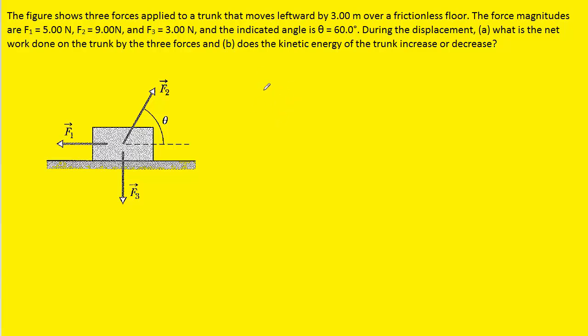We know that in order to calculate the work that a particular force does on an object, we have to multiply the magnitude of that force by the displacement by the cosine of an angle. And that angle is going to be between the force and displacement.